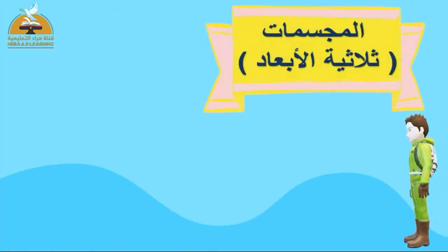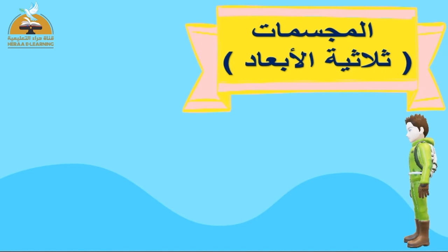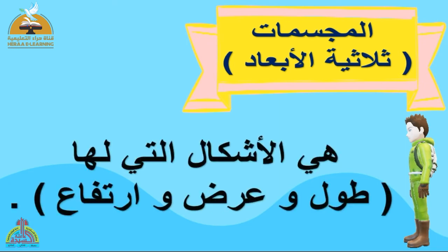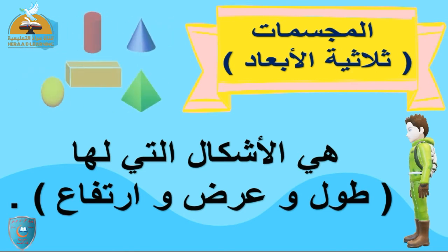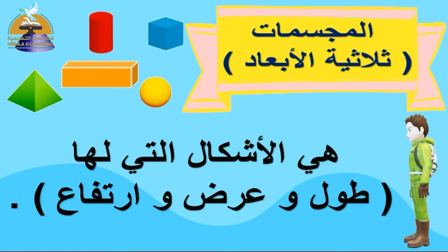يلا نشوف المجسمات. المجسمات مختلفة عن الأشكال ثنائية الأبعاد، لأن المجسمات ليها جسم أقدر أمسكه. المجسمات بيسميها ثلاثية الأبعاد لأنها ليها طول وعرض وارتفاع - ثلاث حاجات لازم تكون متوفرة. زي المكعب، والأسطوانة، والمخروط، والكرة، ومتوازي المستطيلات، والهرم الرباعي. لازم تعرف تفرق بين الأشكال ثنائية الأبعاد والمجسمات ثلاثية الأبعاد.